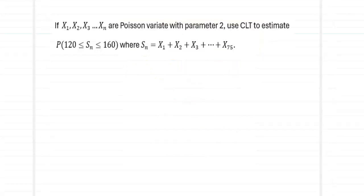We will quickly move on to the problem. If x1, x2, x3 up to xn are Poisson variates with parameter 2, use the central limit theorem to estimate the probability of 120 less than or equal to s_n less than or equal to 160, where s_n is x1 plus x2 plus x3 up to x75.